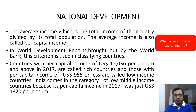What is meant by per capita income? The average income, which is the total income of the country divided by its total population, is known as per capita income. In World Development Reports brought out by the World Bank, this criteria is used in classifying countries. Countries with per capita income of 12,056 US dollars per annum and